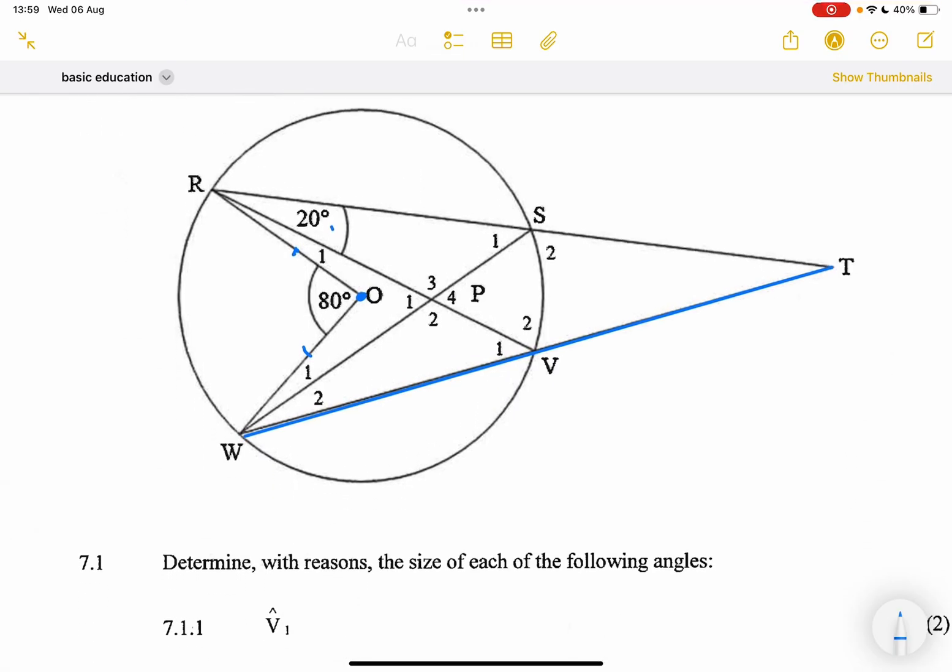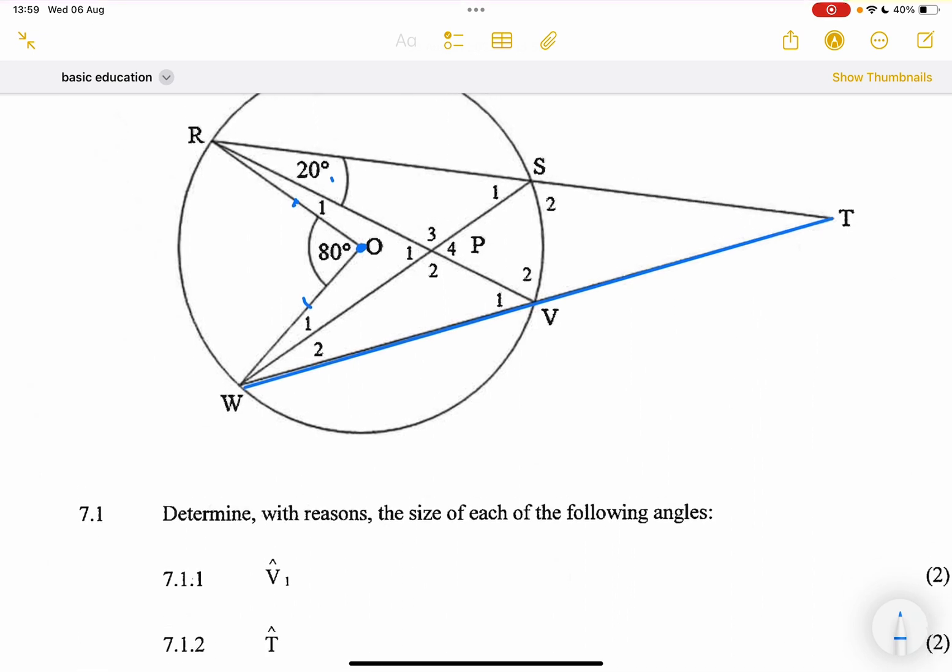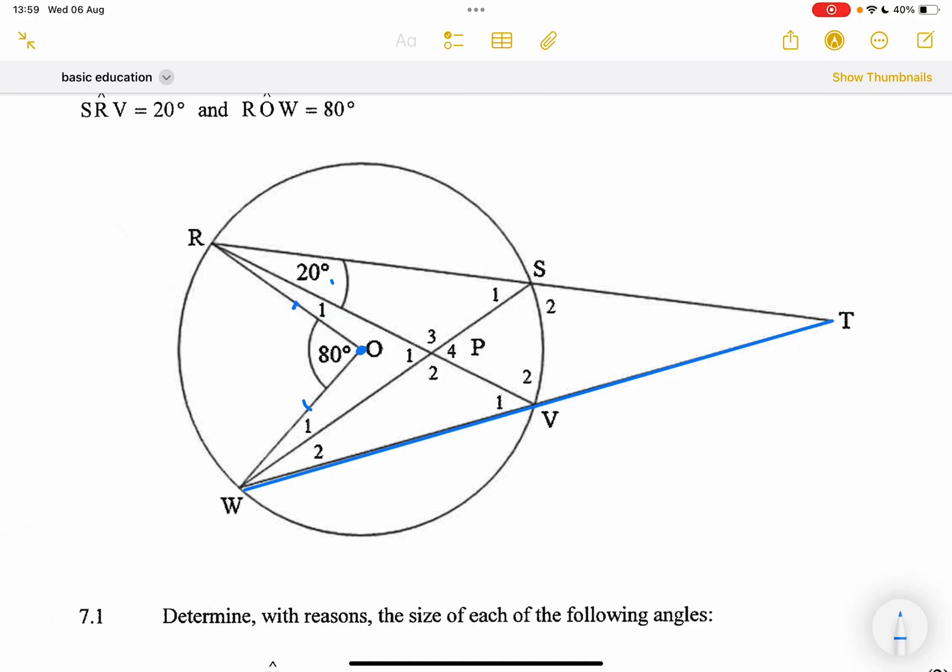They say determine with reasons the size of each of the following angles. They want the size of V1. If I look at V1, that is the angle at the circumference. I can note there that they are both subtended by arc or chord RW. Angle at the center is twice angle at the circumference, which means that this angle here has to be 40 degrees.